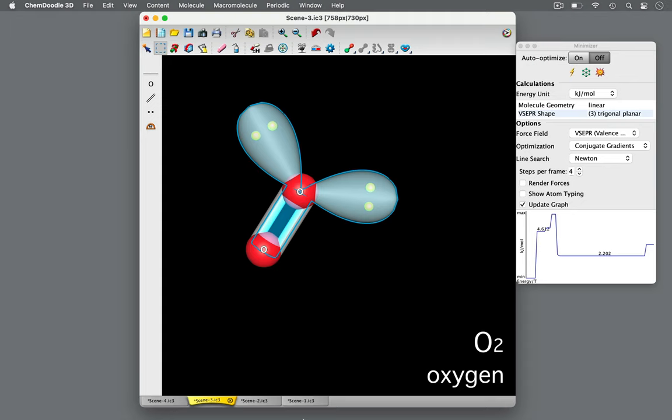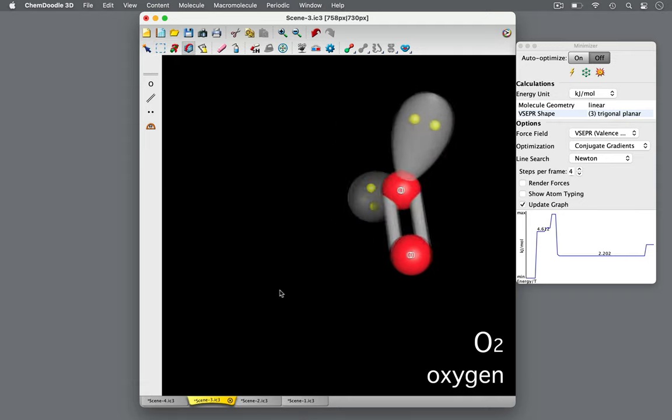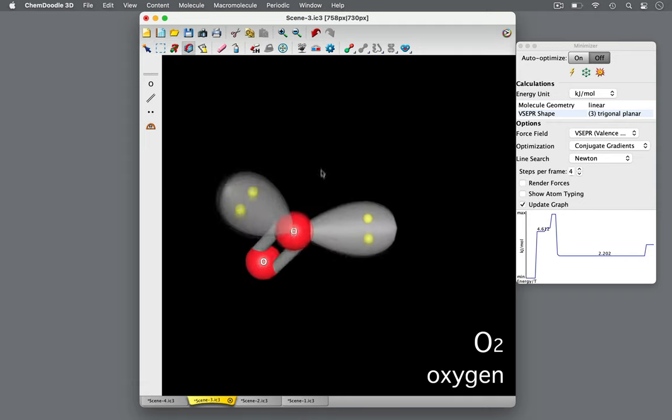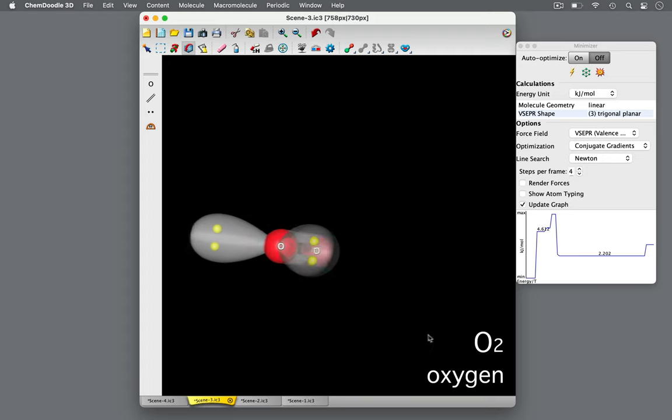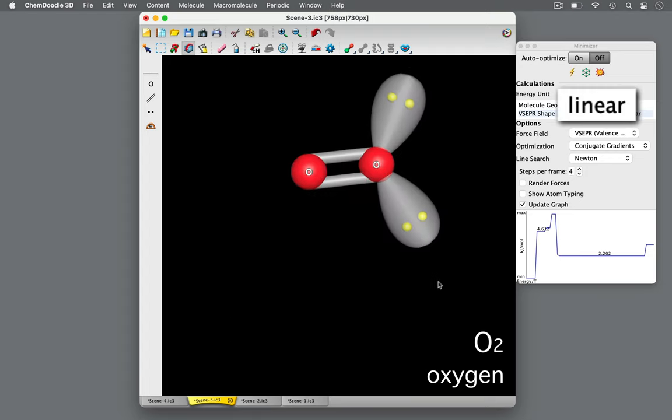So this molecule has a trigonal planar electron domain geometry. However, with only one other atom bonded to the central atom, VSEPR theory predicts the oxygen molecule will adopt a linear molecular geometry.